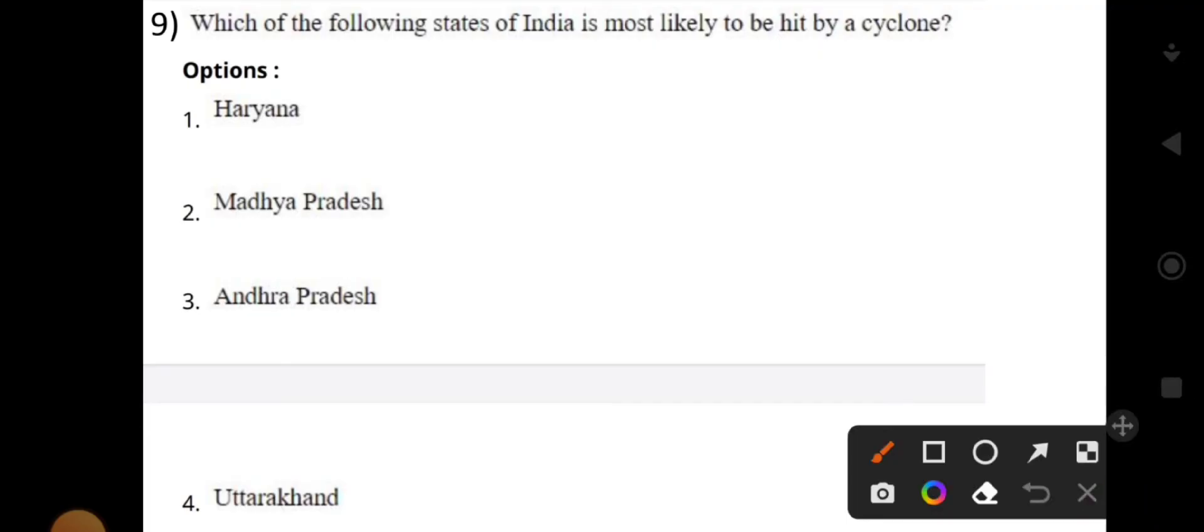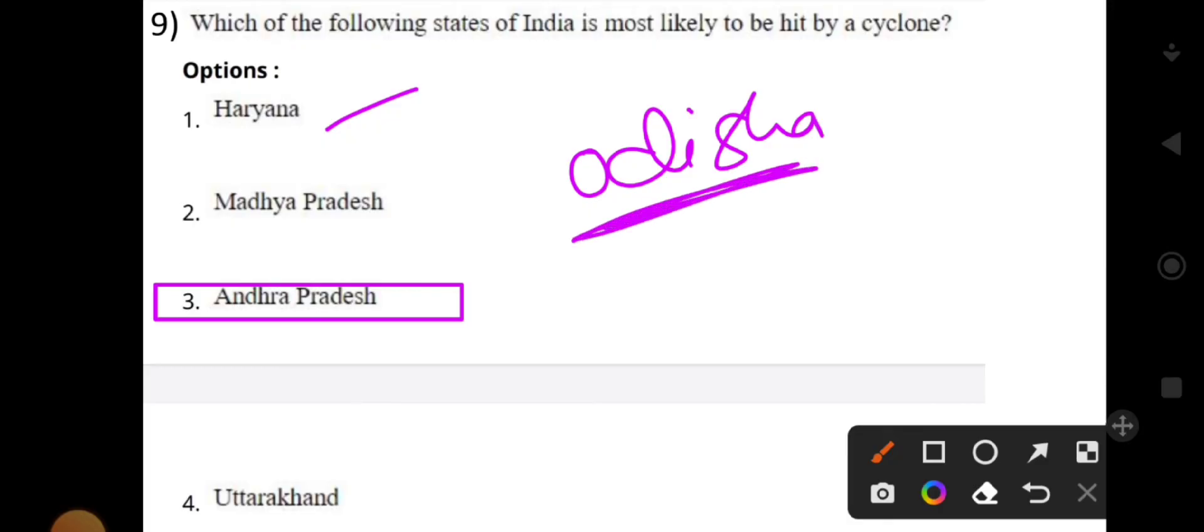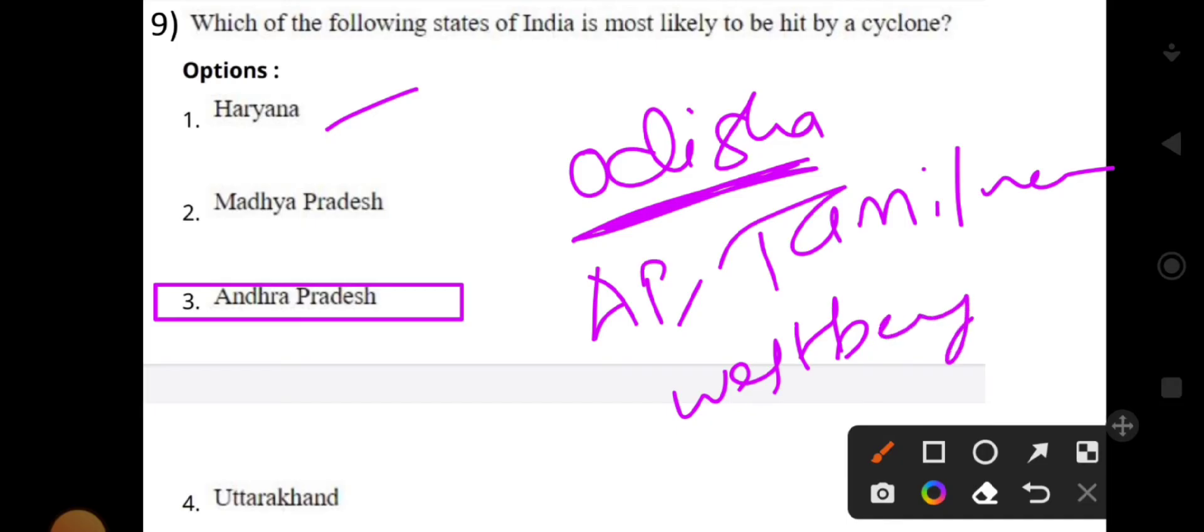Which of the following states of India is most likely to be hit by a cyclone? States most affected by cyclones are Odisha, Andhra Pradesh, Tamil Nadu, West Bengal, Karnataka, Maharashtra, Goa, and Kerala.